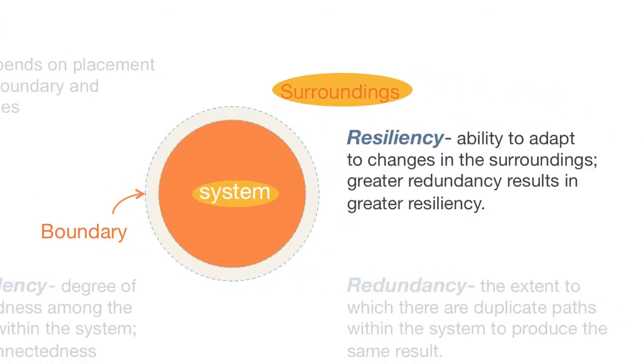This next property, resiliency, describes the ability of the system to adapt to changes or perturbations in the surroundings. In general, greater redundancy should produce greater resiliency.